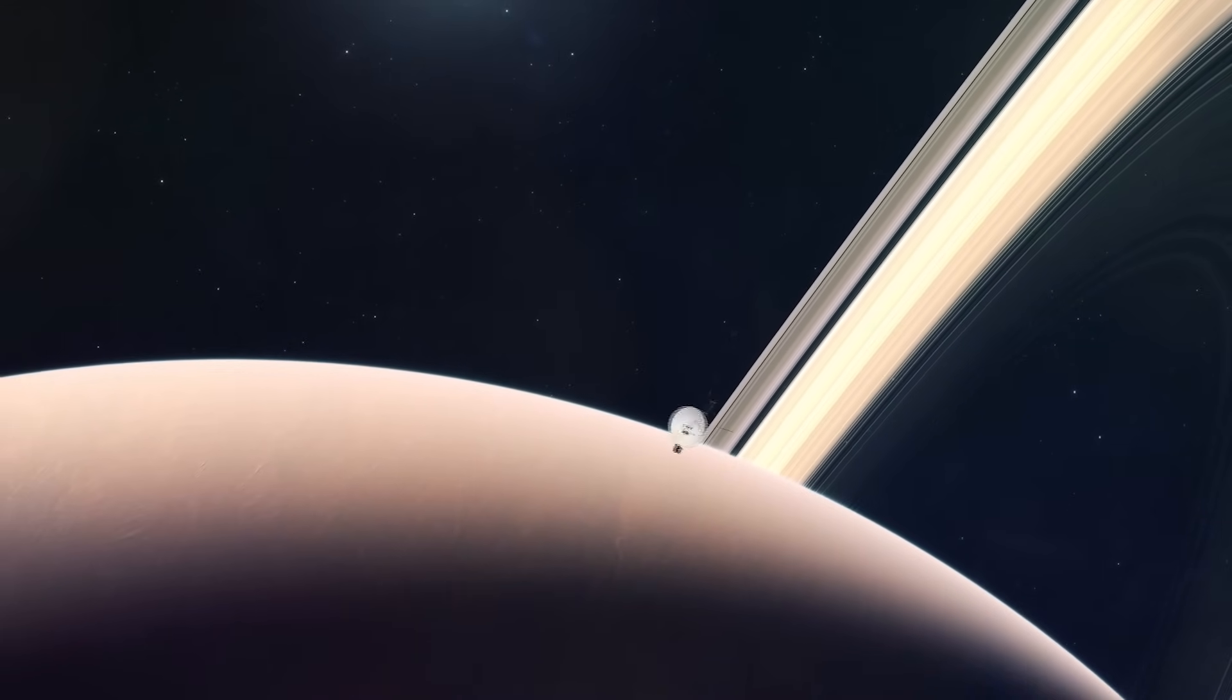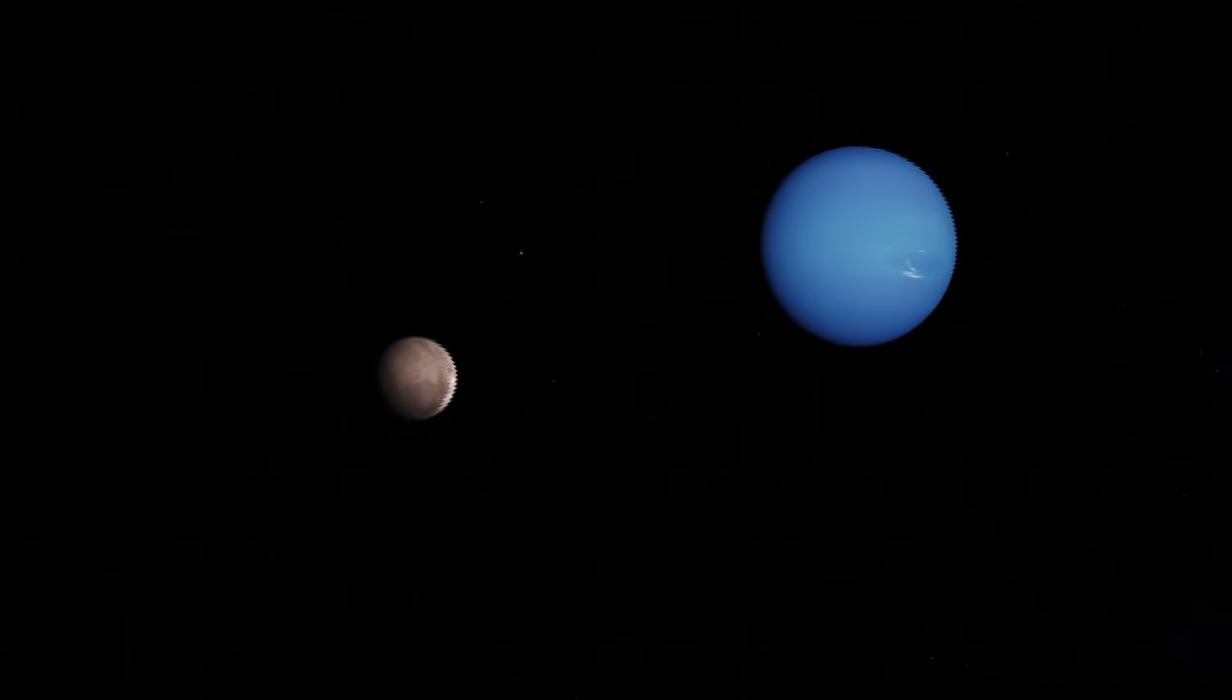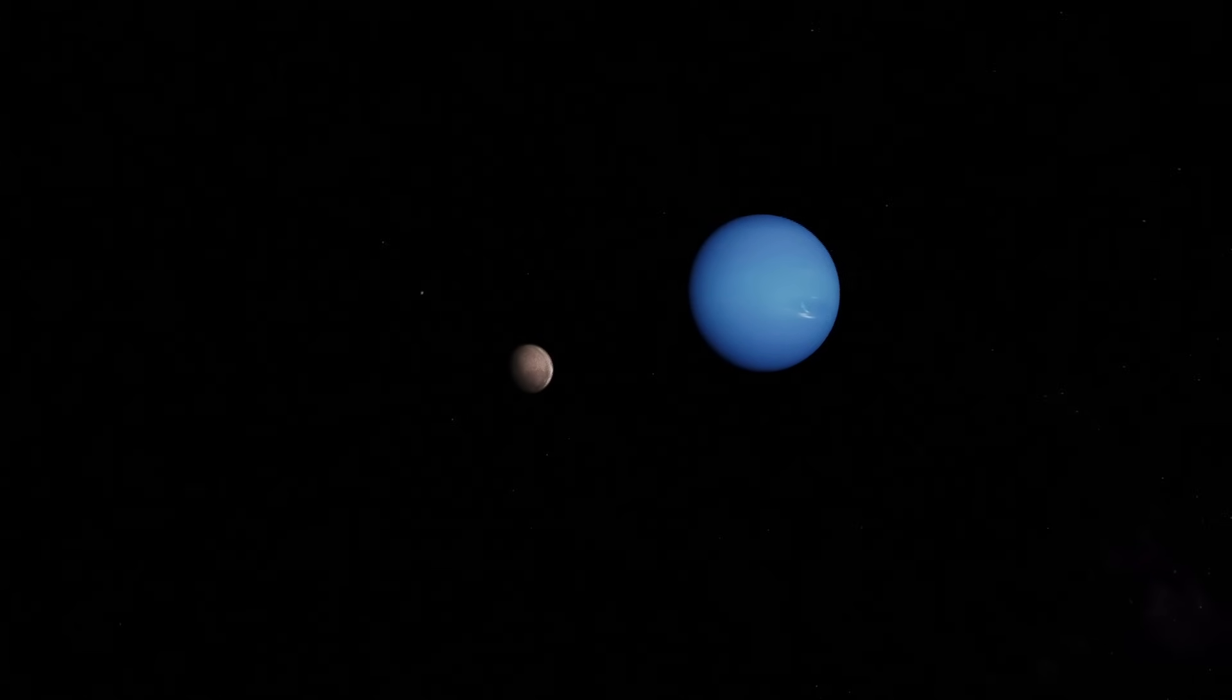If planets can rain diamonds, what can their moons do? To find out, we're heading to Neptune's largest moon, a captured world with a violent past and a very active present. This is Triton, Neptune's largest moon.